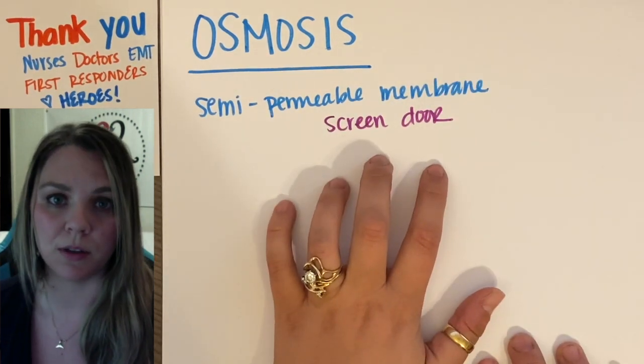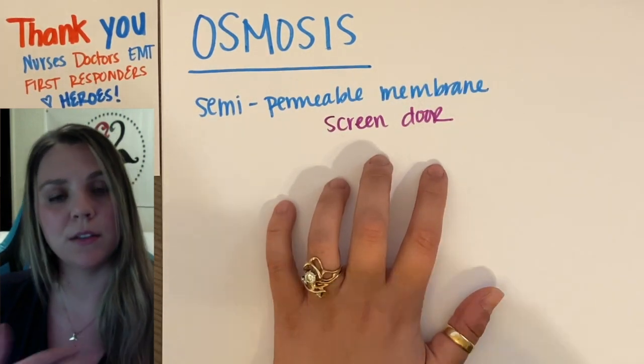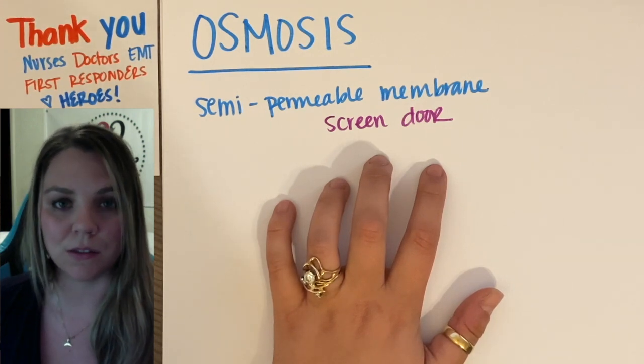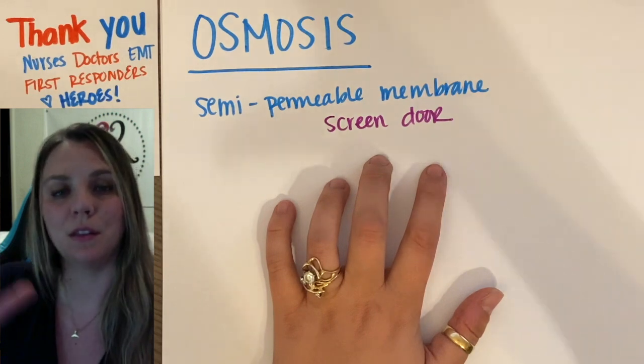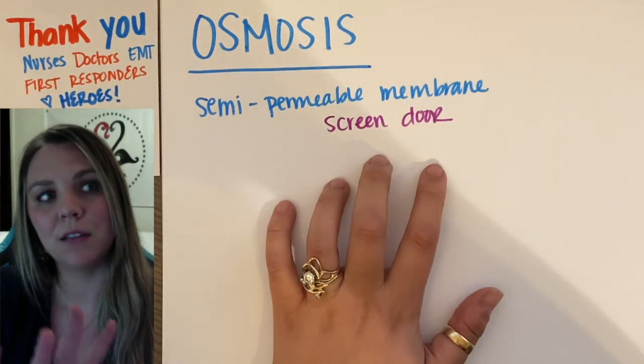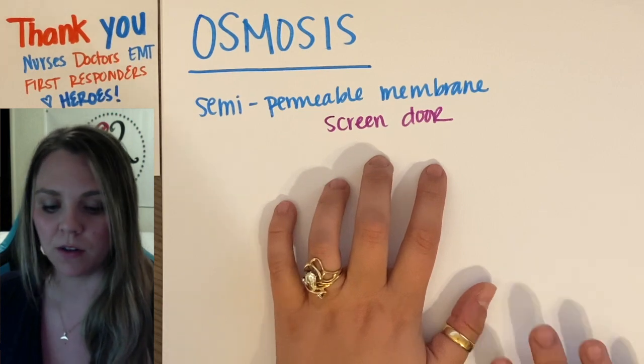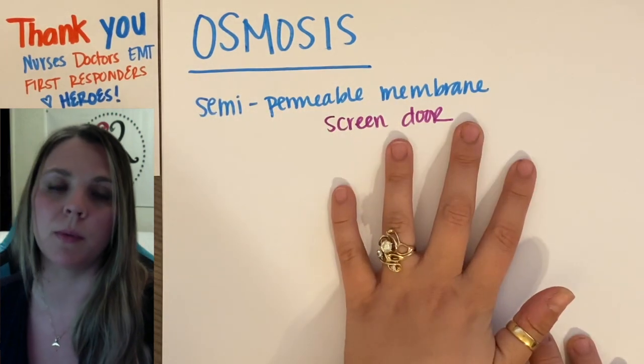So think about your screen door in summer, right? Your screen door allows this nice cool breeze to come in your house. That's wonderful, but it also keeps the things you don't want out of your house, right? The bugs are not coming into your house. That's why we have a screen. This is what the semi-permeable membrane does.